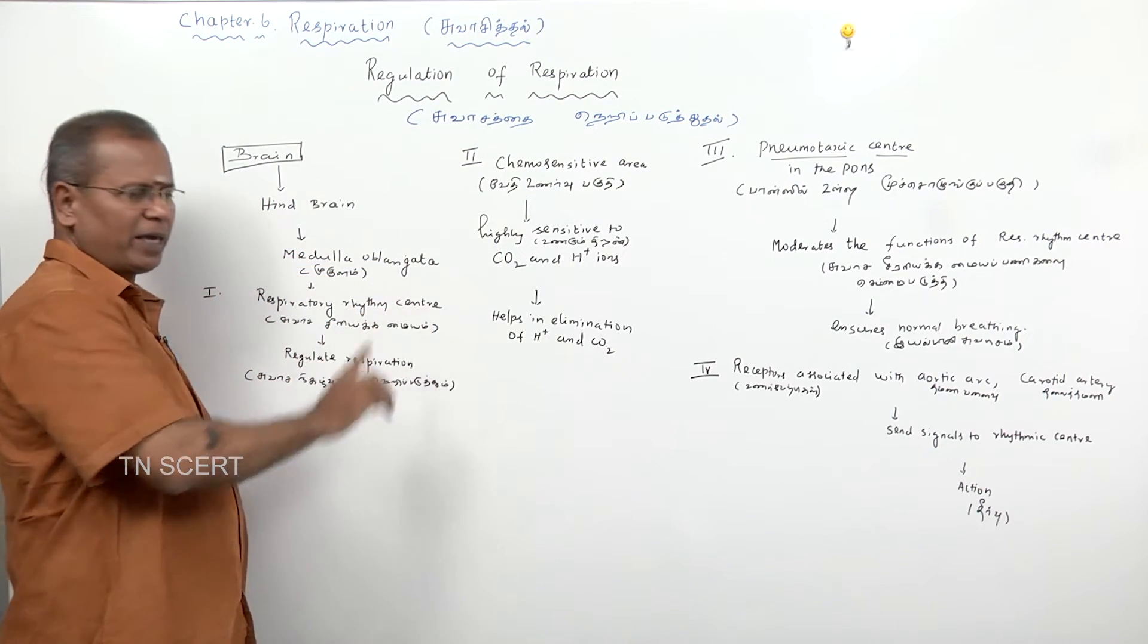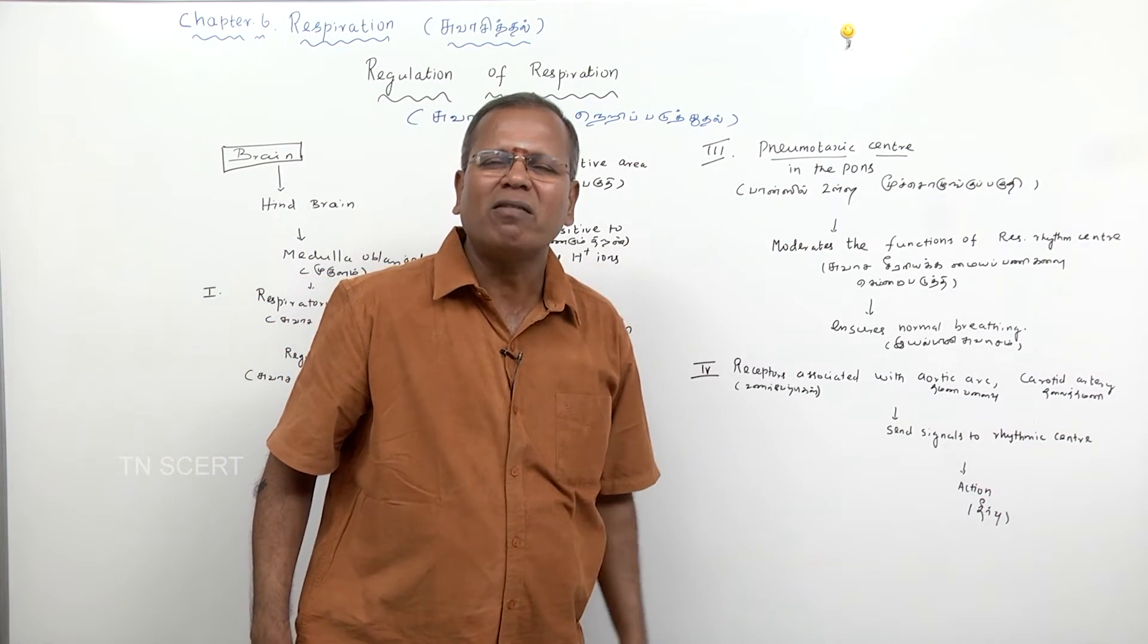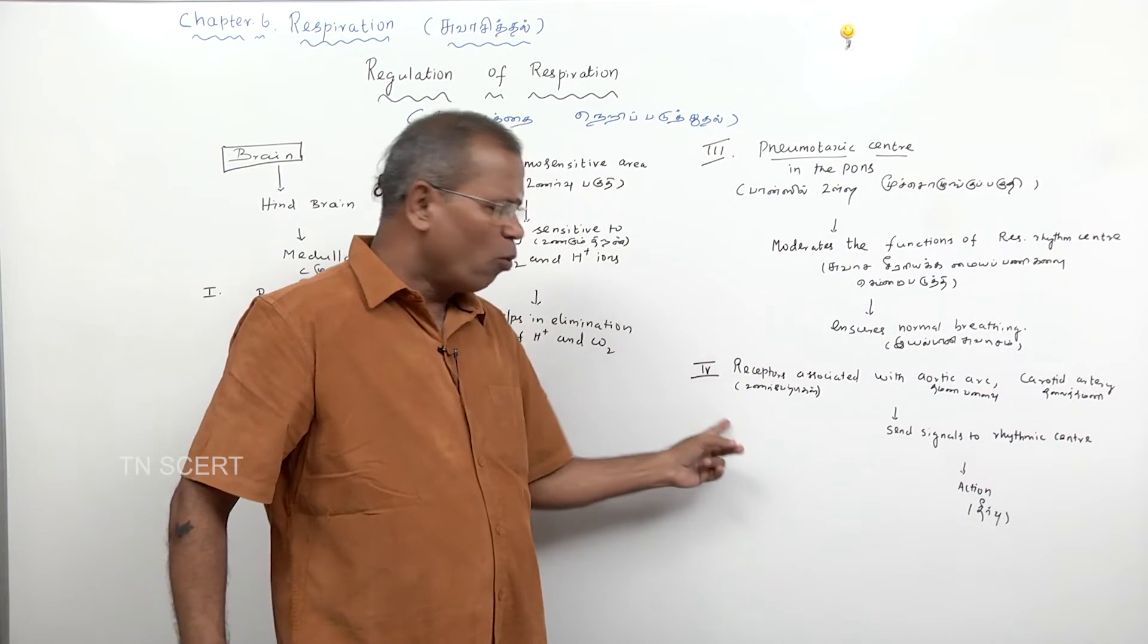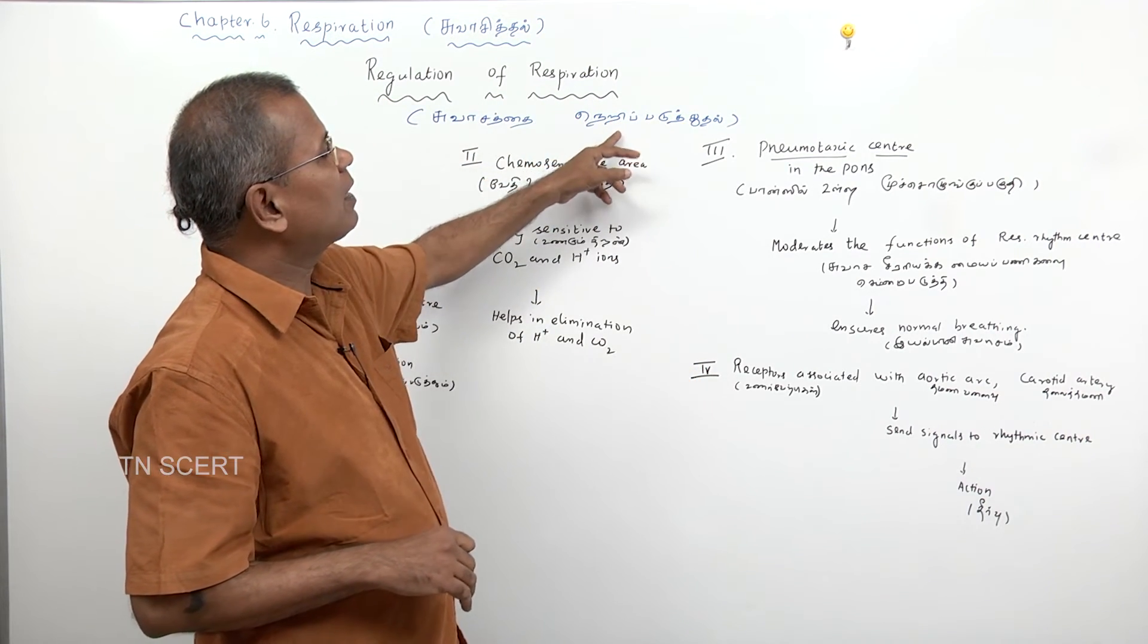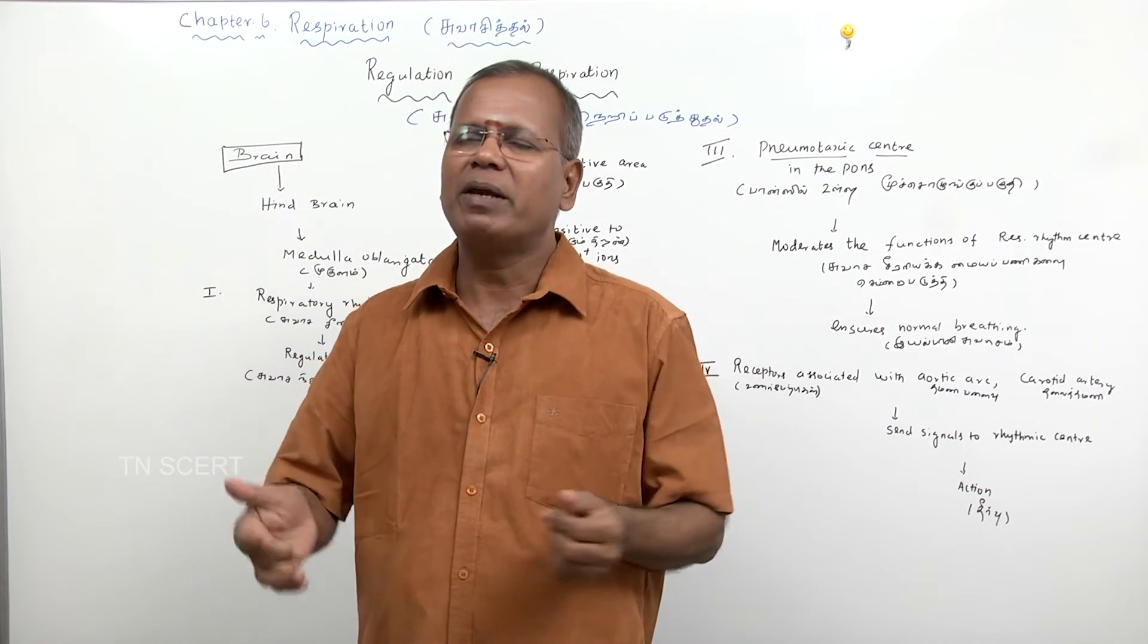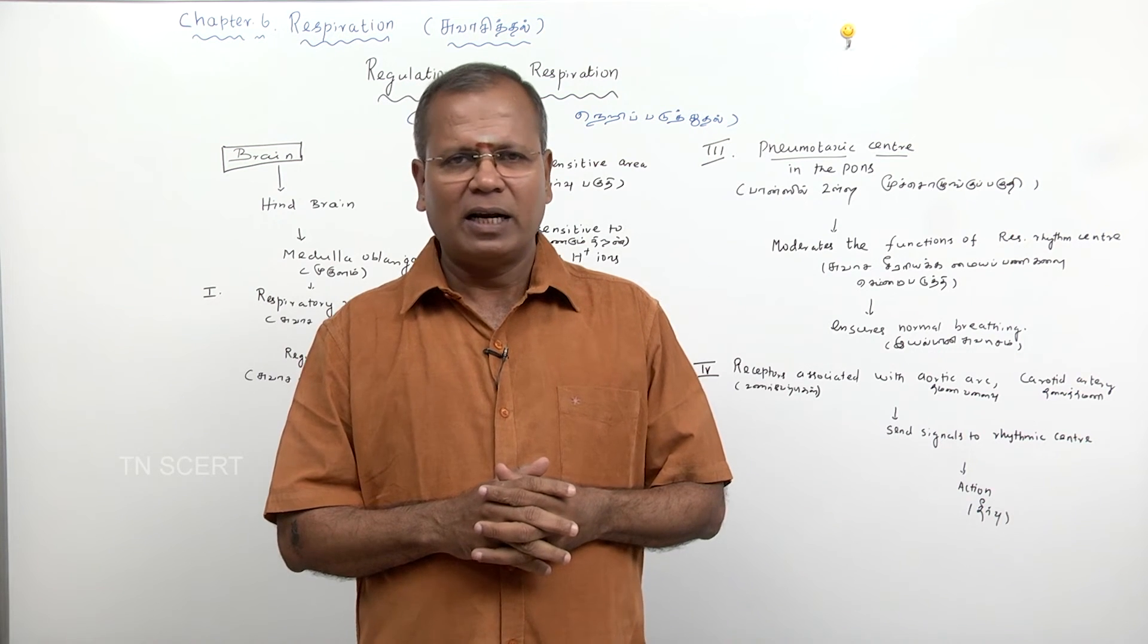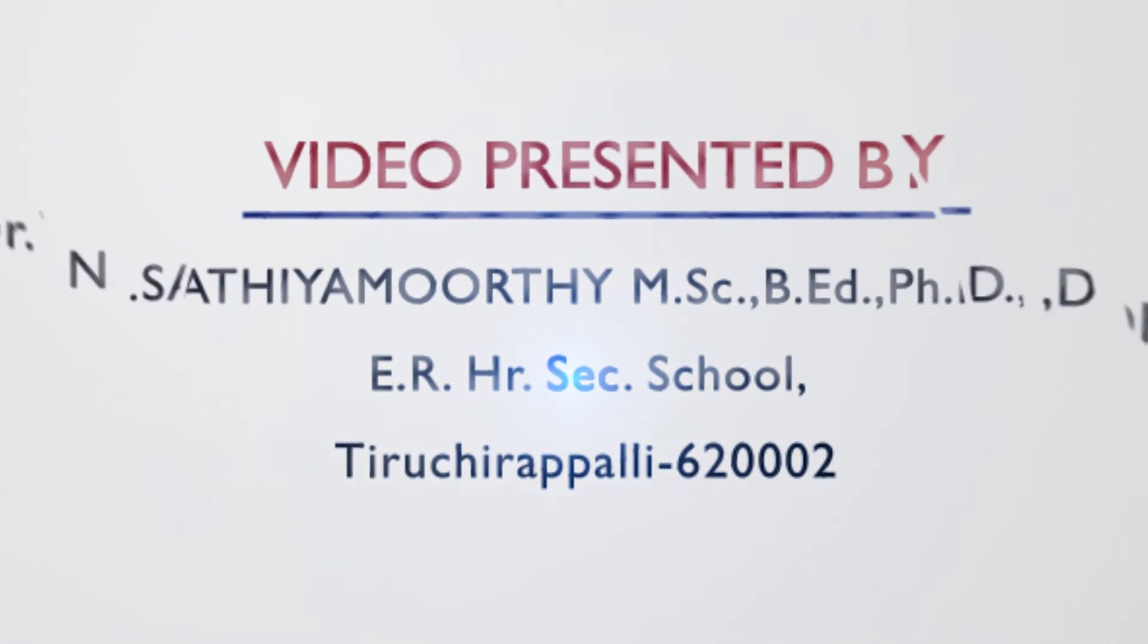So respiration in our body is regulated by: number one, respiratory rhythm center; number two, chemosensitive region; number three, pneumotaxic center in the Pons; and also receptors in the aorta and carotid artery. All these help in proper rhythmic breathing. This is how our rhythmic breathing takes place and our nervous system maintains it properly. You should understand this well. Thank you.